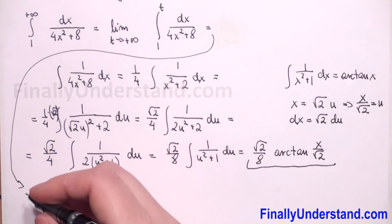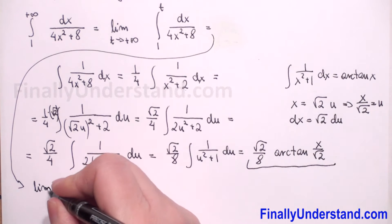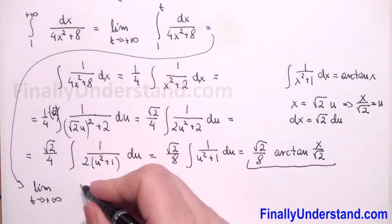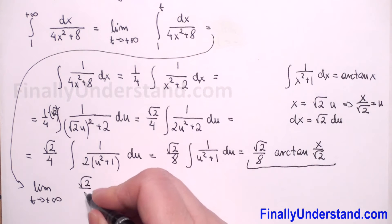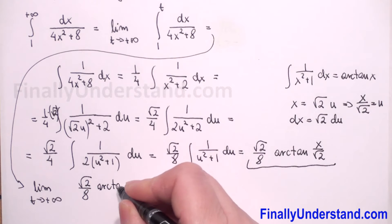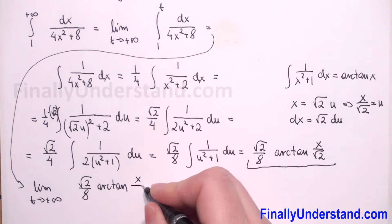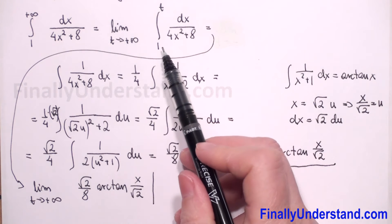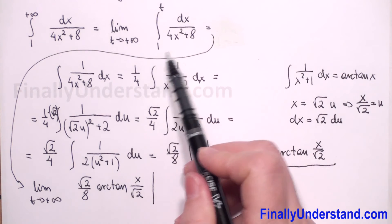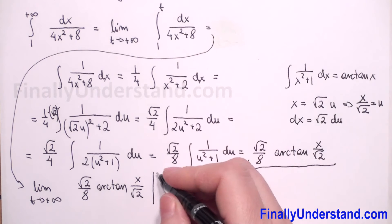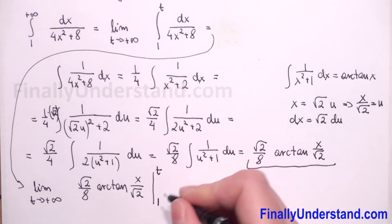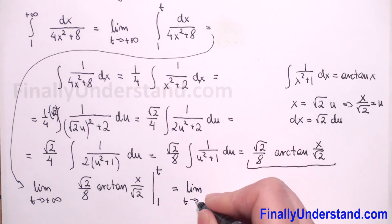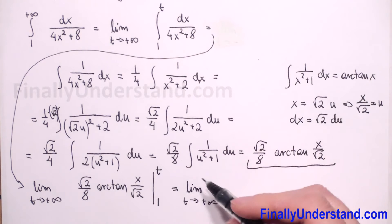Now we come back to our limit. We copy the limit as t goes to positive infinity, with the solution square root of 2 over 8 times arctangent of x over square root of 2, evaluated from the lower limit 1 to the upper limit t.